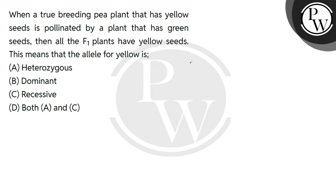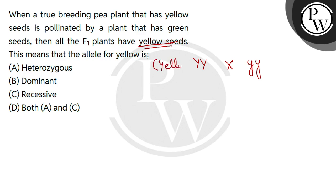Let's say the true breeding yellow-seeded plant is represented as Y-Y, and the green-seeded plant is represented as small y-y. When the F1 generation comes from crossing these two, all the seeds are yellow-seeded. How does this happen if we have this yellow-seeded plant crossed with the green-seeded plant?